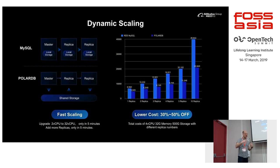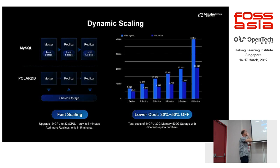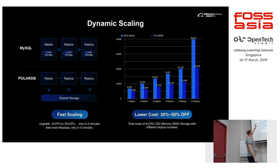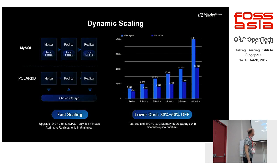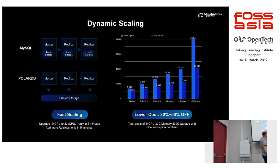One of the goals is to scale storage and compute independently. With a traditional MySQL system, for higher availability you would have multiple replicas in addition to the master, and for each replica you add local storage. But here you have shared storage, so when you add a replica you only add compute resources — the storage stays the same. The cost savings when you need many replicas are significant compared to using many servers with local storage.